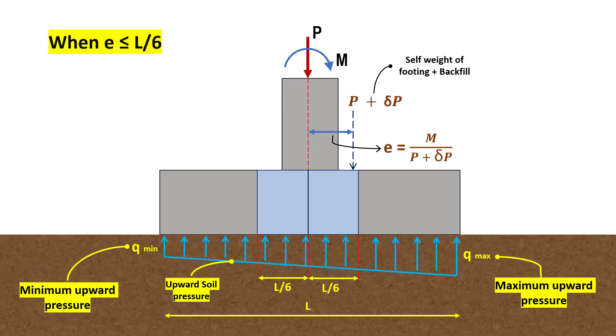Let's consider a column transmitting an axial load P with a uniaxial moment M. This moment introduces an additional eccentricity E. If this eccentricity lies within the mid third of the footing, that E is less than or equal to L by 6, the footing experiences a non-uniform upward soil pressure across its entire contact area.